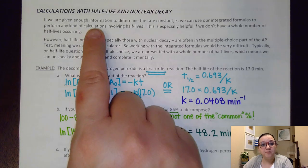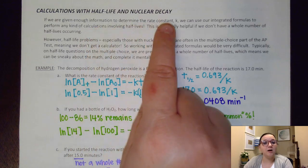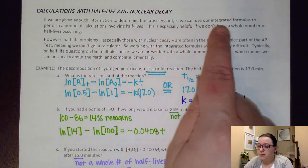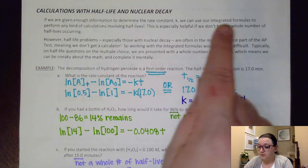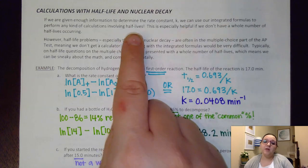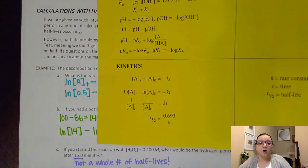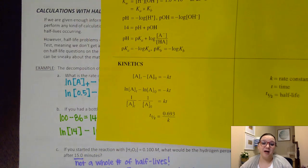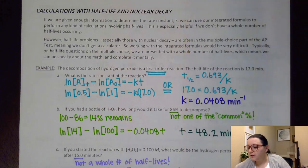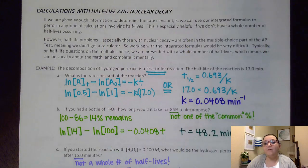If we're given enough information to determine our rate law constant K, we can use our integrated formulas to perform calculations involving half-lives. These are really helpful when we don't have a whole number of half-lives occurring. Sometimes we only have fractional half-lives occurring, and so the math can get a little more complicated.